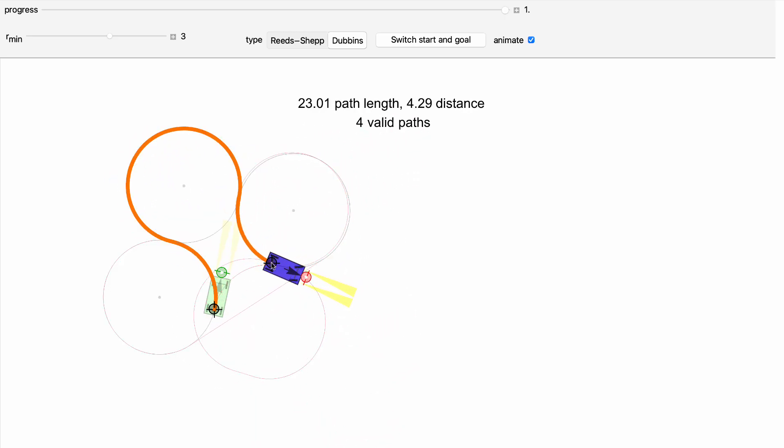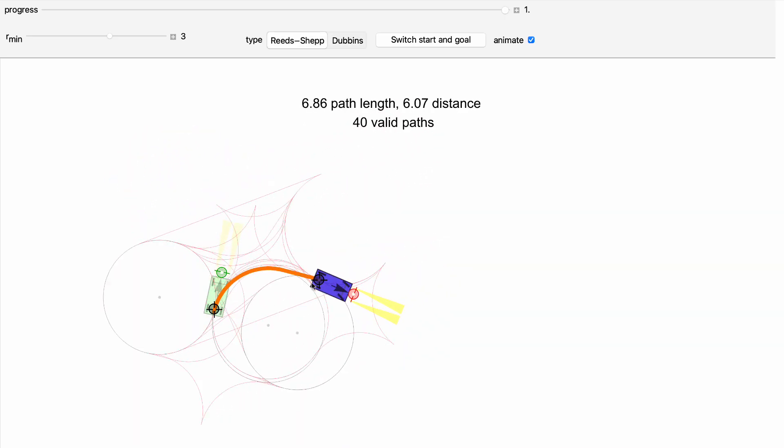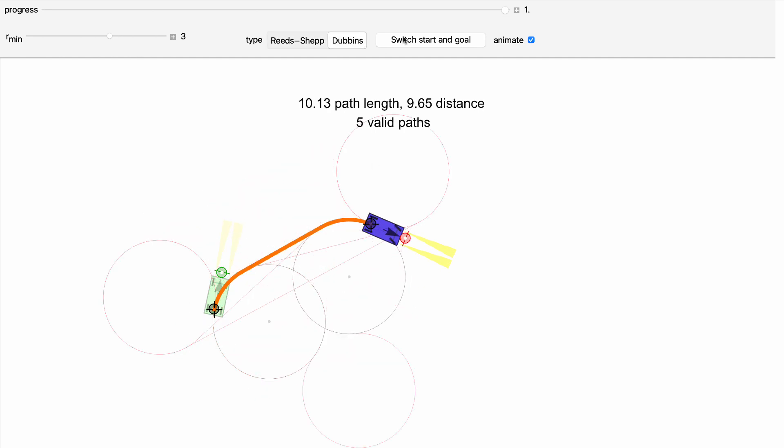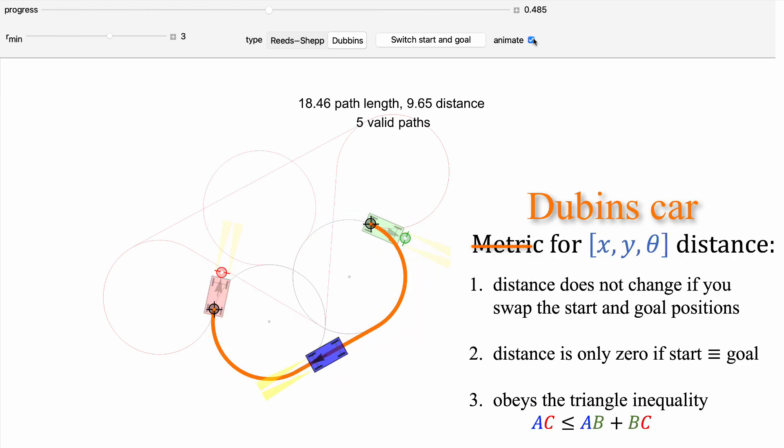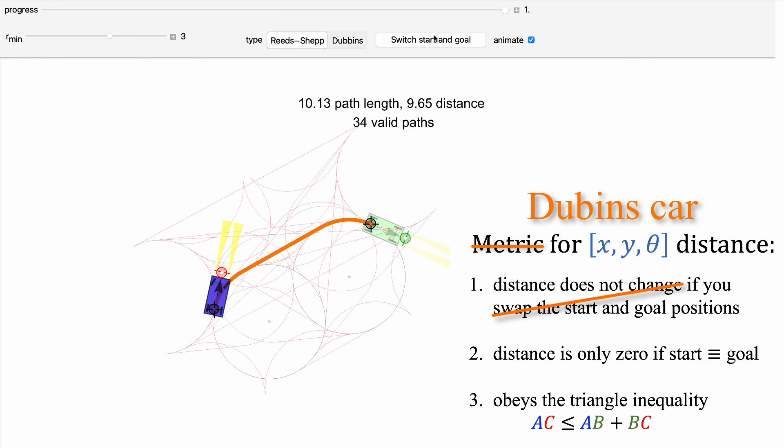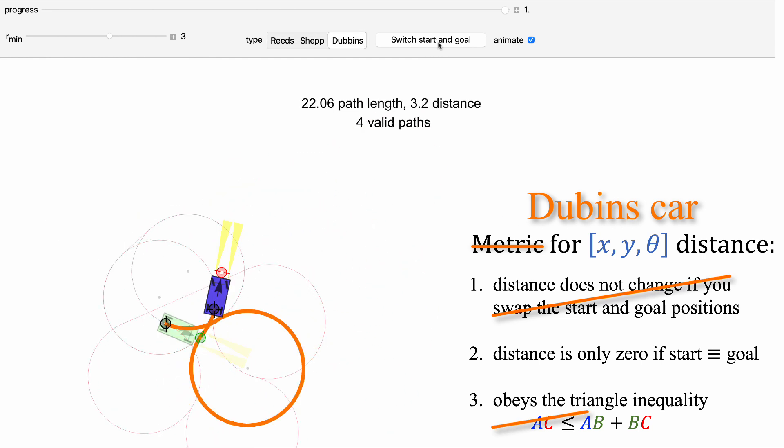You might remember that the Dubin's car has only six possible path types. Because the car can only move forwards, the Dubin's path is never shorter than the Reeds-Shep path. The Dubin's path is not a metric. Often, the distance changes if the start and goal positions are swapped.